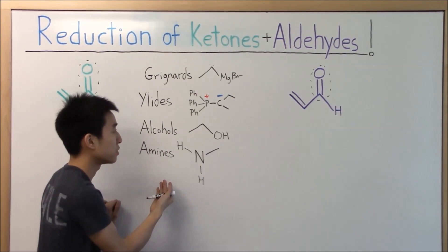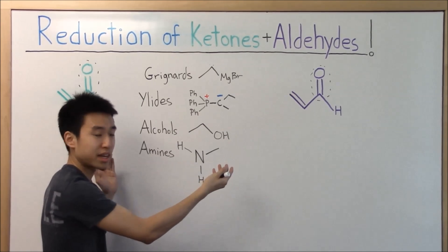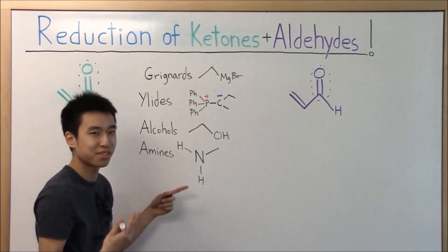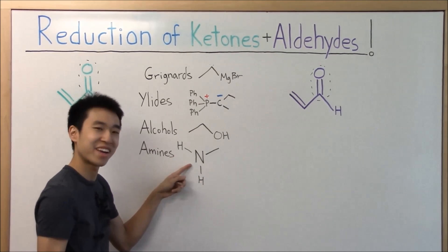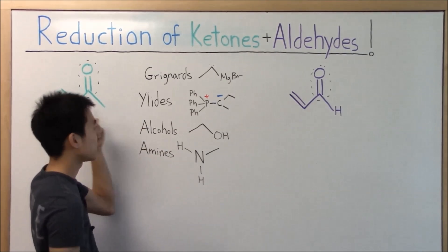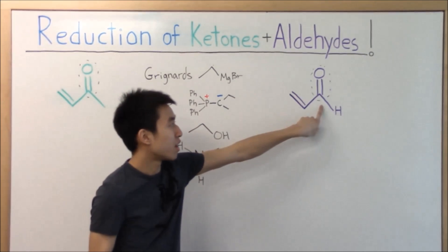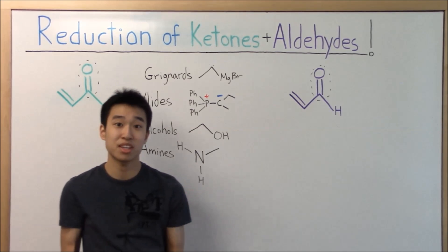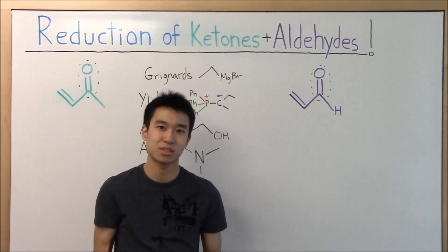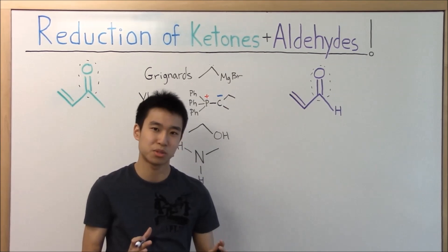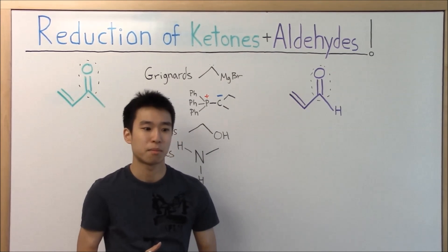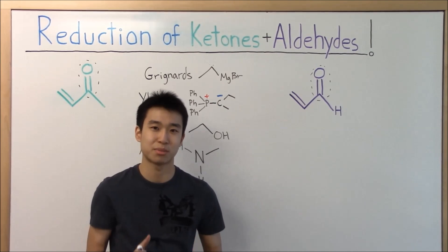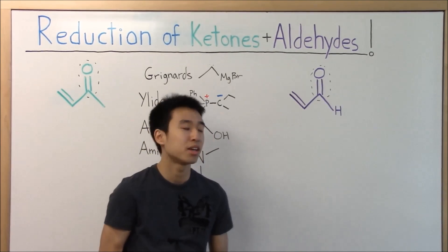Amines can also be used to react with ketones and aldehydes — more specifically, the nitrogen is nucleophilic and can target those two carbonyl positions to create imines and enamines, which are kind of cool too, and the mechanisms to create them are very similar to acetals.